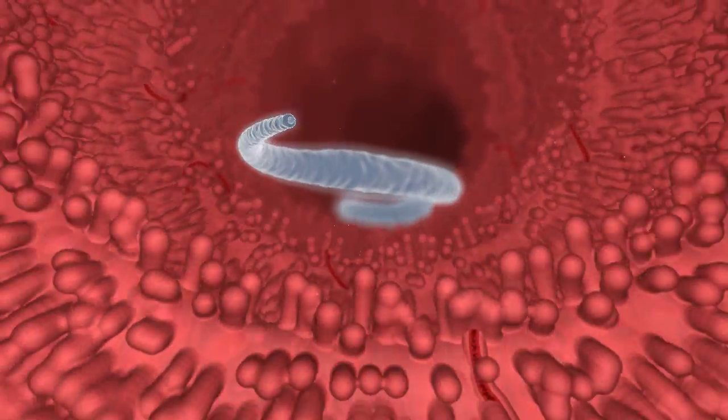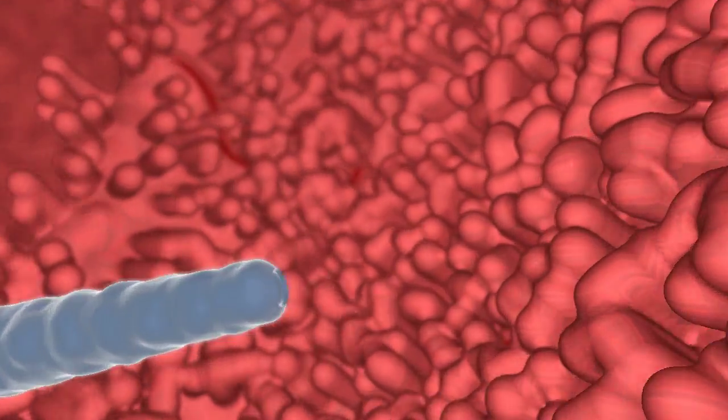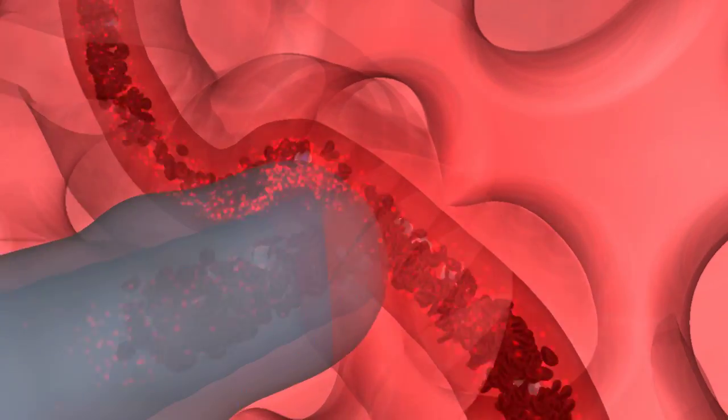Hookworm, which is illustrated here, also causes anemia by feasting on host red blood cells.